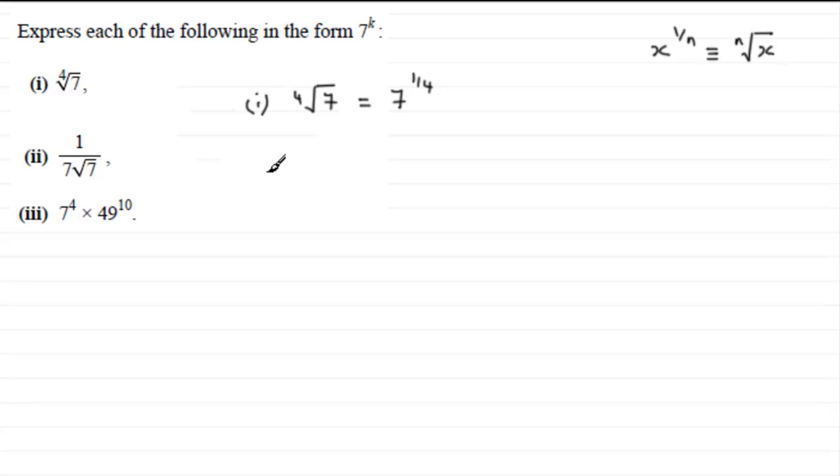Now in part 2 we've got to take 1 over 7 root 7 and express that in the form of 7 to the power k. We can pick up on this previous result. We can see this as 7 and the square root of 7, well n would be 2 essentially, so it's going to be 7 to the power half. We're multiplying 7 with 7 to the power half. For this we just add the powers in the denominator. This is 7 to the power 1 and we add it to the power half, so 7 to the power 1 and a half. It would be better to write that as a top heavy fraction as 3 over 2.